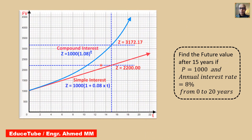Here is one example comparing simple interest and compound interest. We need to find the future value after 15 years with P equal to 1000 and an annual interest rate of 8%. Using the simple interest formula P into 1 plus RT, we get 2200. Using the compound interest formula P into (1+R) to the power T, we get 3172.17. This shows money grows much more rapidly with compound interest.